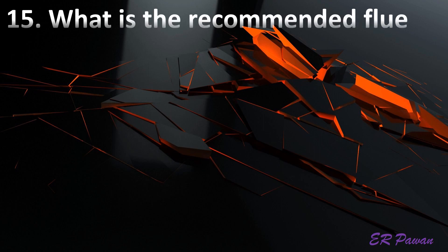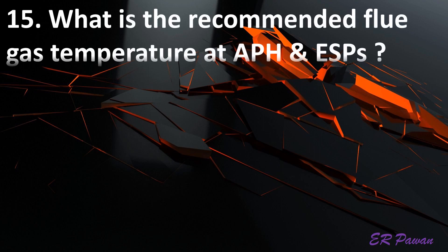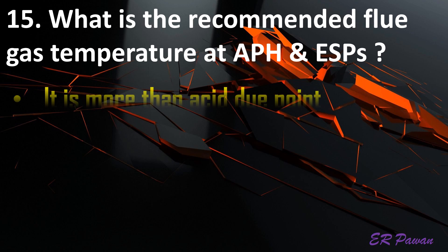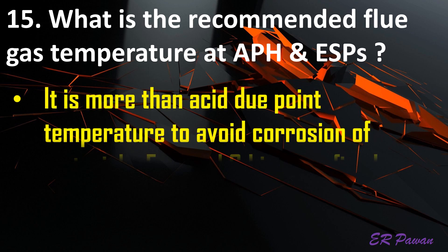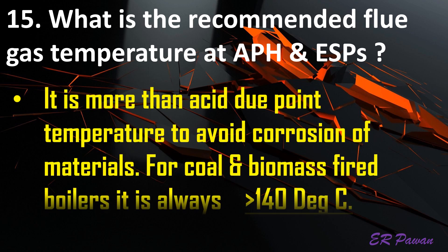Question 15: What is the recommended flue gas temperature at air preheaters and electrostatic precipitators? It should be more than the acid dew point temperature to avoid corrosion of materials. For coal and biomass fired boilers, it is always greater than 140 degrees Celsius.